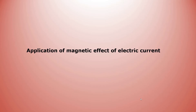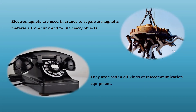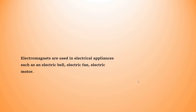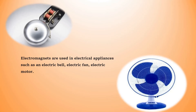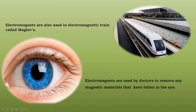A few applications of the magnetic effect of electric current: First, electromagnets are used in cranes to separate magnetic materials from junk. This is also used in telecommunication equipment like telephones. Electromagnets are used in electric appliances like electric bells, electric fans, electric motors, and headphones. Electromagnets are also used in electromagnetic trains, known as maglev trains, which operate with the help of electromagnets. They are also used by doctors — when magnetic materials accidentally fall in our eyes, doctors use electromagnets to remove them.